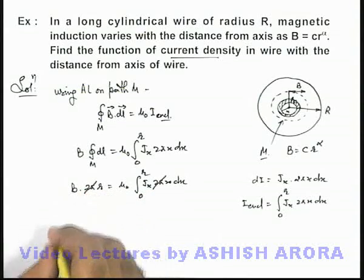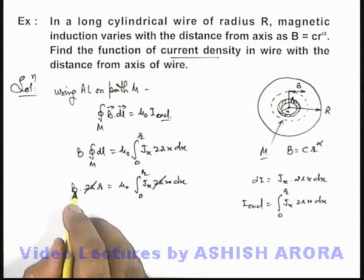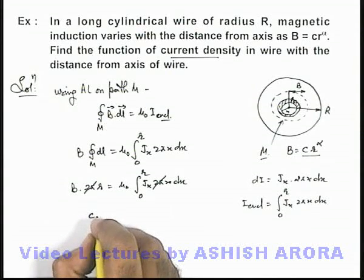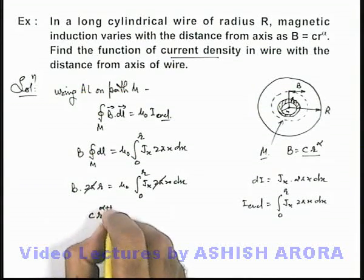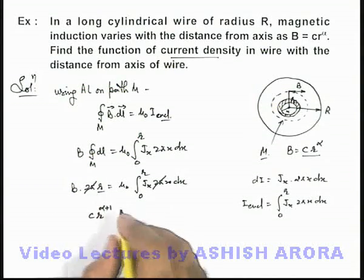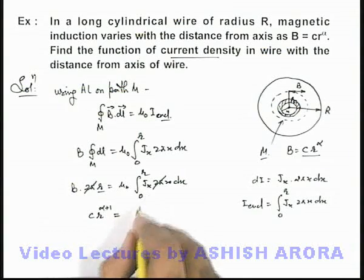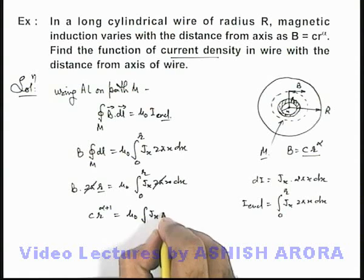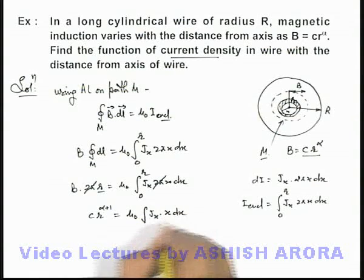Here this 2π is a constant which can be cancelled. If we substitute the value of B, which is cr^α, this will become cr^(α+1) because there is one r already available. This equals μ₀ times integration of J(x) · x dx from 0 to r.